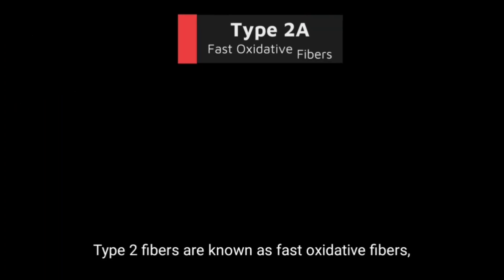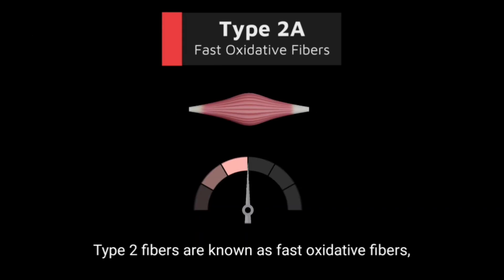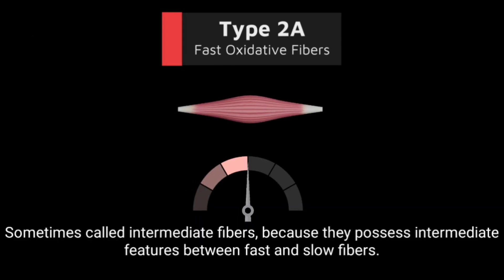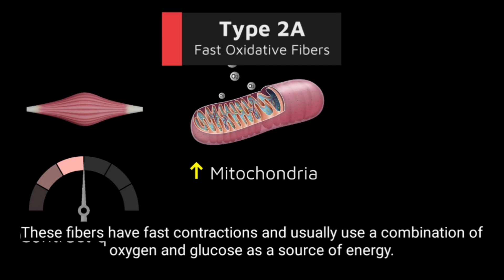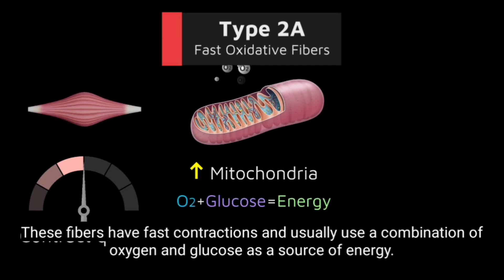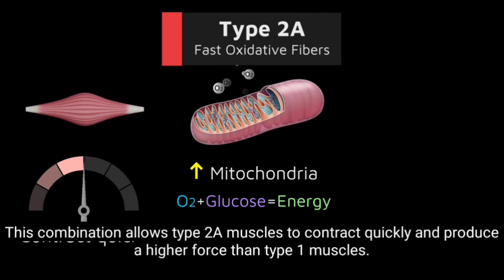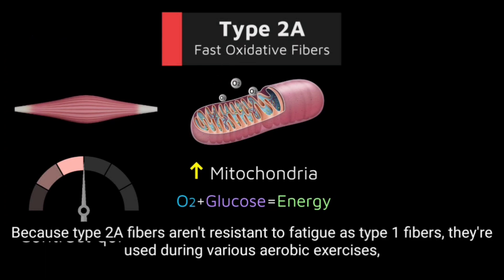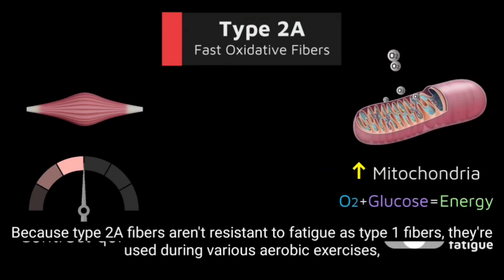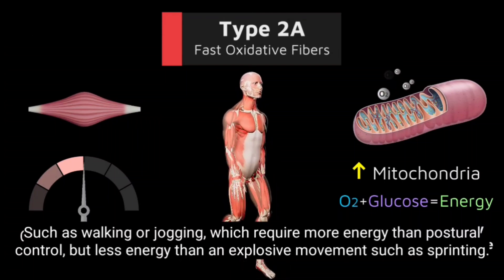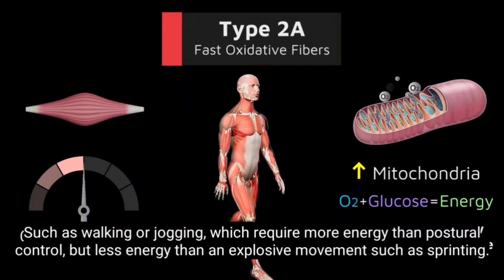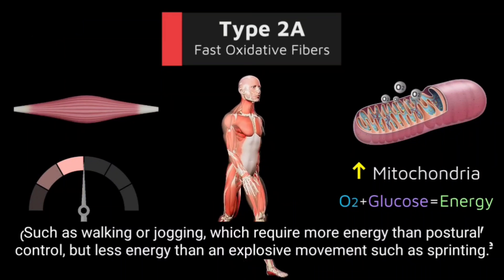Type 2a fibers are known as fast oxidative fibers, sometimes called intermediate fibers because they possess intermediate features between fast and slow fibers. These fibers have fast contractions and usually use a combination of oxygen and glucose as a source of energy. This combination allows type 2a muscles to contract quickly and produce a higher force than type 1 muscles. Because type 2a fibers aren't as resistant to fatigue as type 1 fibers, they are used during various aerobic exercises such as walking or jogging, which require more energy than postural control but less energy than an explosive movement such as sprinting.